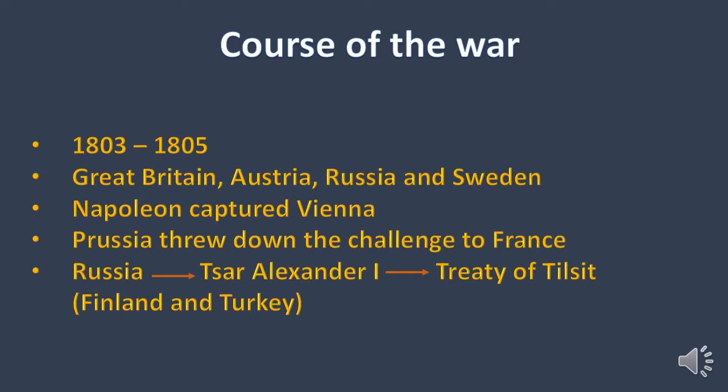Then the kingdom that defied Napoleon was Prussia. Napoleon accepted the challenge, destroying Prussia and taking half of her territory. In June 1807, Napoleon's troops defeated Tsar Alexander the First's armies of Russia. Curiously, both emperors decided to become allies by the Treaty of Tilsit, by which Napoleon allowed the Tsar to do what he wanted with Finland and certain territories of Turkey.